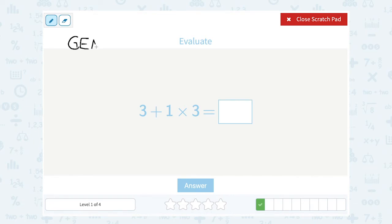Remember the acronym GEMDAS reminds us of our order. First we do any grouping, then any exponents, then any multiplication or division, and then last any addition or subtraction.